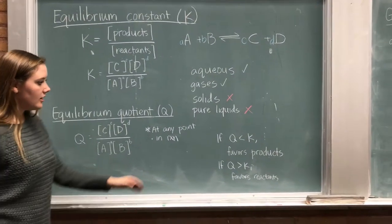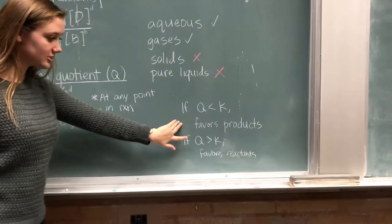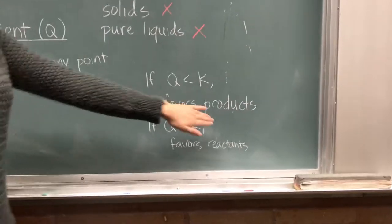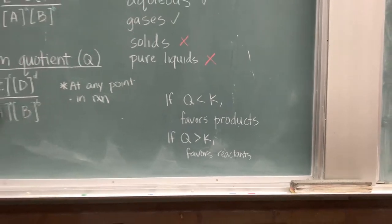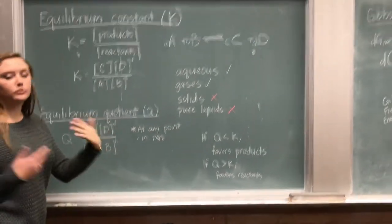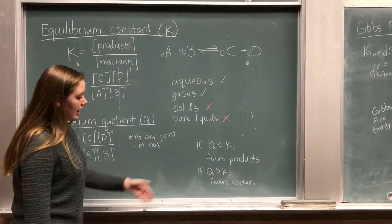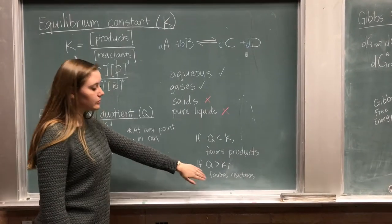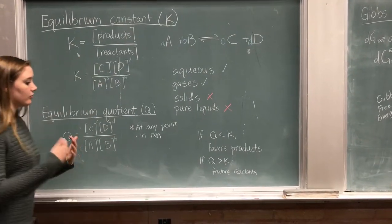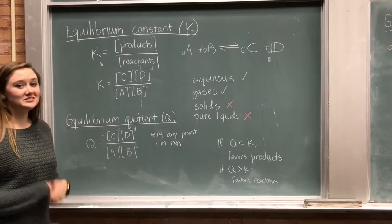So we know that if our Q is less than our K, we're going to be favoring our products. Because our Q has less products, and we're going to want to favor the products to increase it to get to our K. However, if we have our Q to be greater than K, that's going to be favoring our reactants for the reverse reason. Does that make sense?